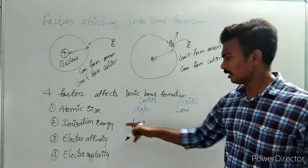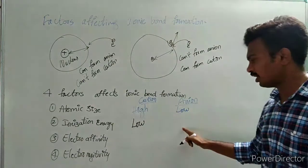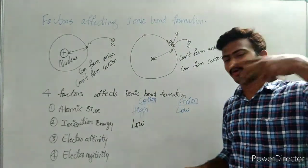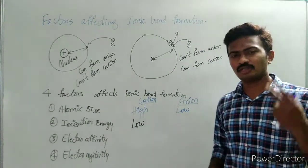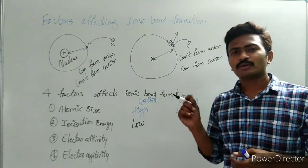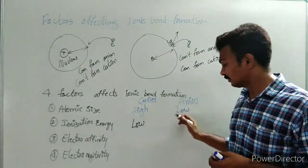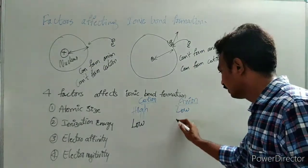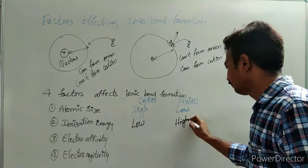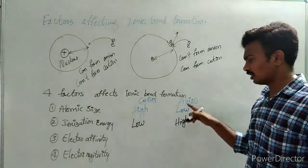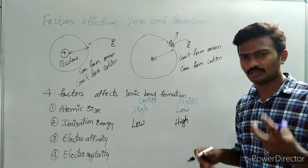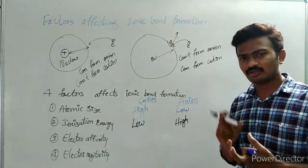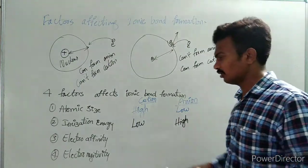In case of anion, ionization energy should be high. To remove the electron, we need to provide more energy — that means the atom is not ready to lose the electron. So, we can simply say that ionization energy in case of anions will be high. An atom with higher ionization energy is ready to form an anion.